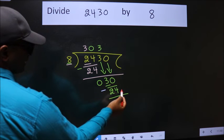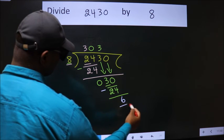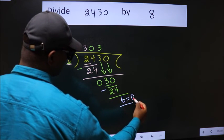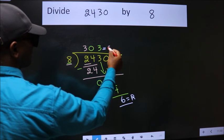No more numbers to bring it down. So we stop here. This is our remainder. This is our quotient.